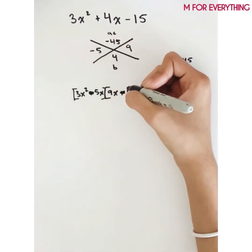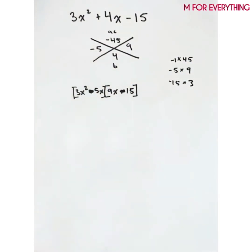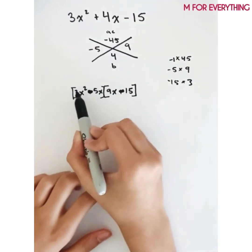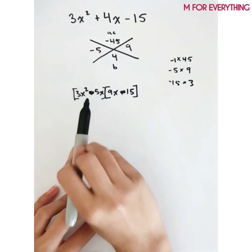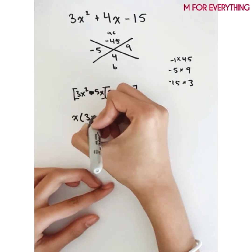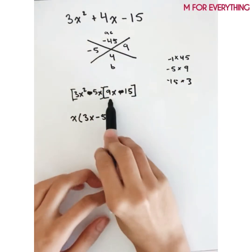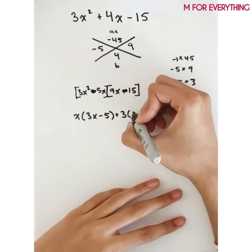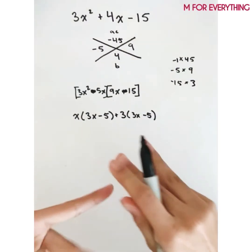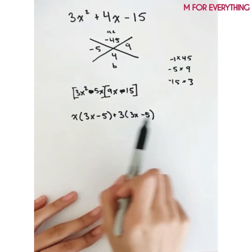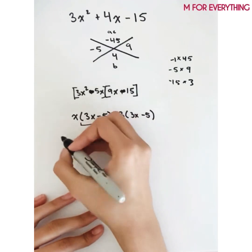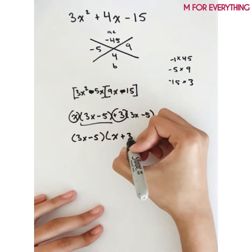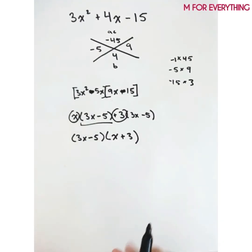Now factoring each pair: from the first pair (3x squared minus 5x), factor out x to get x(3x - 5). From the second pair (9x minus 15), factor out 3 to get positive 3(3x - 5). Both groups share the factor (3x - 5), so the answer is (3x-5)(x+3). If the inner factors don't match, check whether you should factor out a negative.